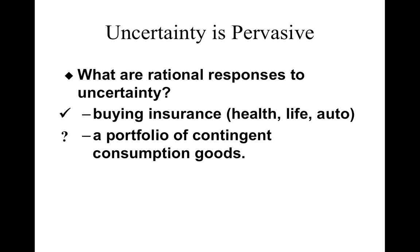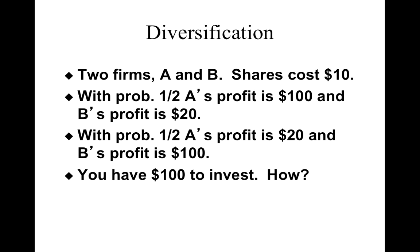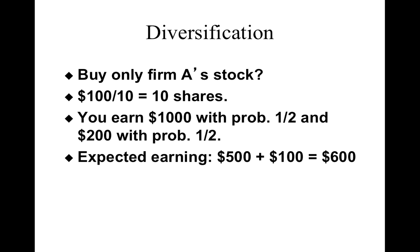What does buying a portfolio mean? Think of it as buying two stocks — stocks are contingent commodities. Say there are two firms A and B; their shares cost ten dollars each. With probability one-half, A's profit is one hundred and B's profit is twenty, and with probability one-half the situation is reversed. You have one hundred dollars to invest. If you buy only firm A's stock, you can buy ten shares — you earn one thousand dollars with probability one-half and only two hundred dollars with probability one-half. The expected earning is six hundred dollars.